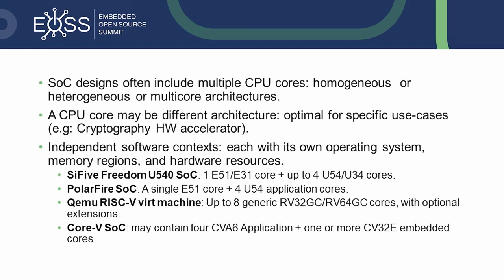In this work, we follow an asymmetric multiprocessing scheme, AMP. We perceive a CPU core as a resource and assign it to a specific domain, meaning OP-TEE OS and Linux each have their own CPU cores. This is motivated by the fact that SoC designs often include multiple CPU cores that could be homogeneous, heterogeneous, or multi-core architectures. CPU cores may have independent software contexts, each with its own operating system, memory regions, and hardware resources.